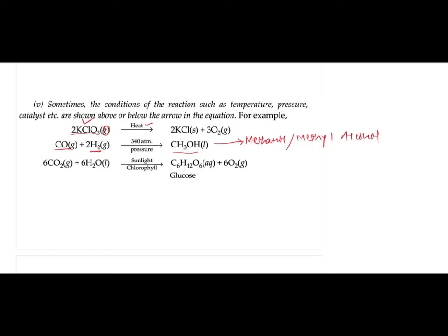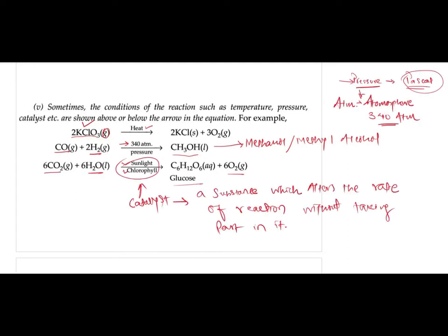This reaction happens under particular conditions: 340 atm pressure. ATM is a unit of pressure. Normal atmospheric pressure is 1 atm. 340 atm is very high pressure, and that condition is used in mixing carbon monoxide and hydrogen to give methanol or methyl alcohol.